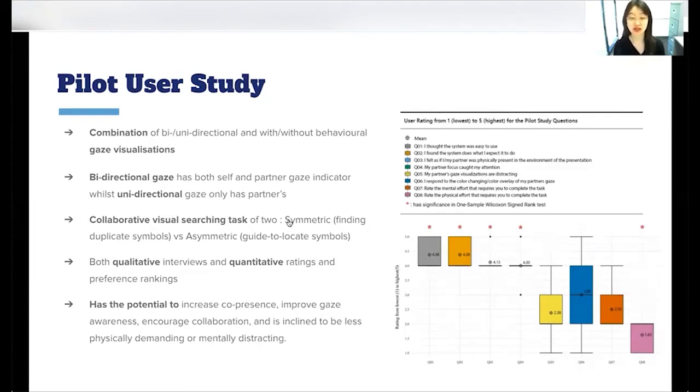The questionnaire consists of eight five-point Likert-scale ratings on system usability, co-presence, mental load, and interface design. We then applied one sample Wilcoxon signed rank test against mid-value three and found statistical significance in Q1 and Q2, which is about system usability, Q3 co-presence, Q4 attention, and Q8 physical effort.